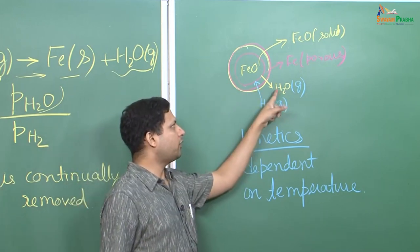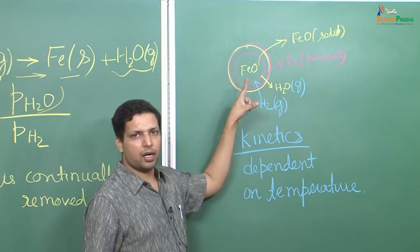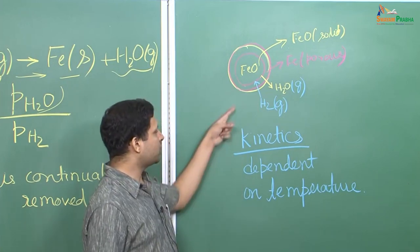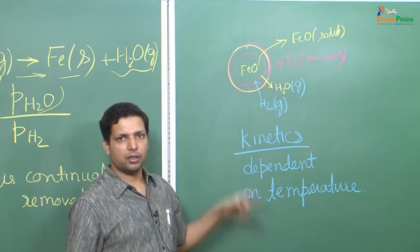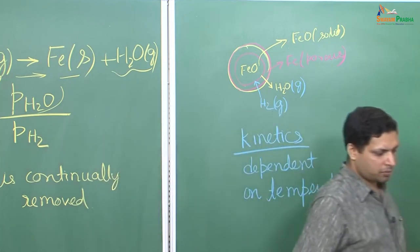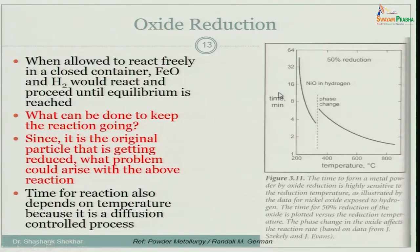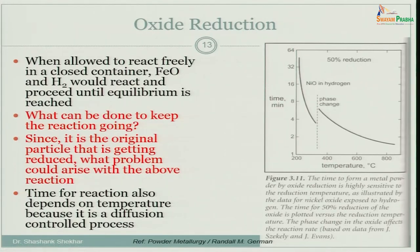At higher temperatures, diffusion of H₂O outward and H₂ inward is faster, so the reaction proceeds faster. At lower temperatures, diffusion is slower and the reaction rate is much lower. The graph on the right shows time to completion as a function of temperature — at 800°C it takes less than 2 minutes, while at around 300-400°C the time increases to about 8 minutes. Below a certain temperature, no amount of time is sufficient because diffusion has virtually stopped.